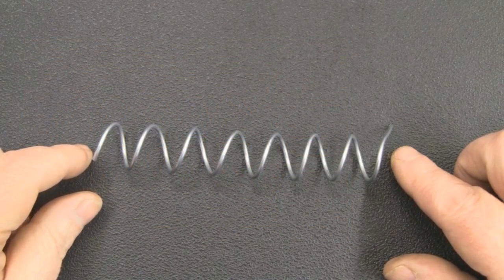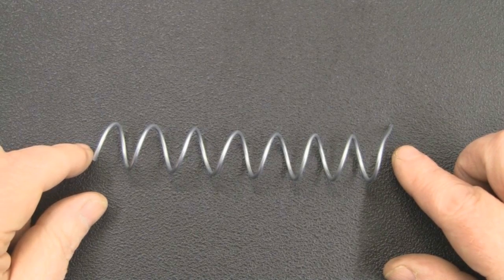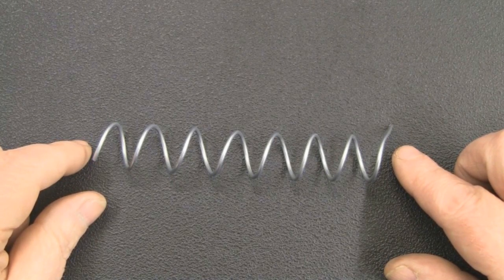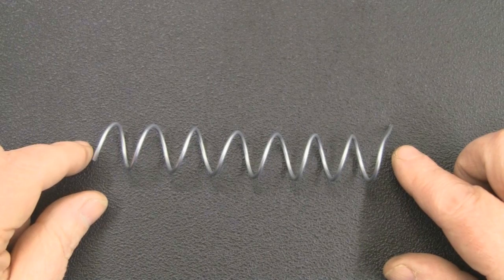In this video I'm going to show you the method that I use to build a helical antenna for 5.8 gigahertz to use with your FPV setup.